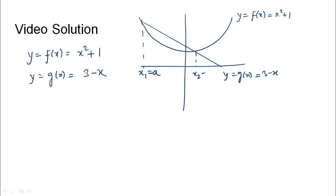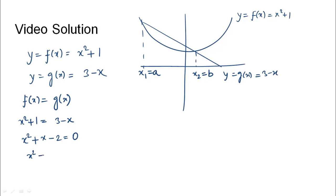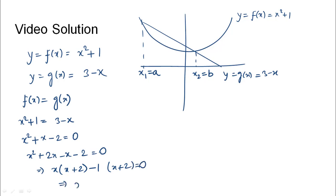The first point of intersection is x1 equals a and the second point is x2 equals b. To find the points of intersection, we equate f(x) equals g(x): x squared plus 1 equals 3 minus x. Rearranging gives x squared plus x minus 2 equals 0, which factors as (x plus 2)(x minus 1) equals 0, giving x equals minus 2 and x equals 1.